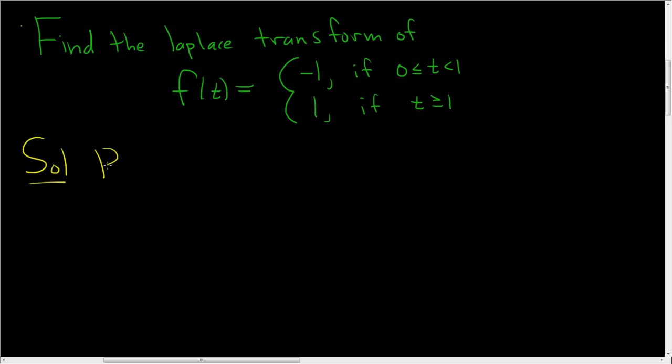So recall, the Laplace transform of a function f of t is equal to the improper integral from 0 to infinity of e to the negative st f of t with respect to t. My s's look like this because I don't want to confuse them with fives. Okay, so let's do this problem.